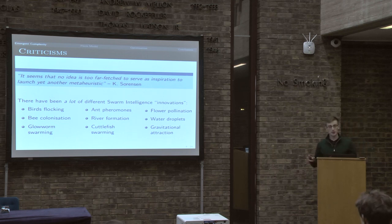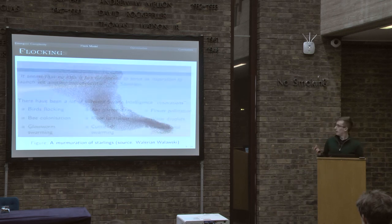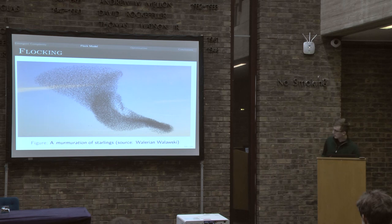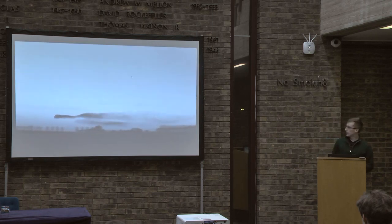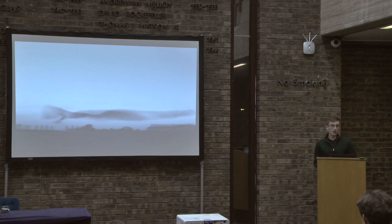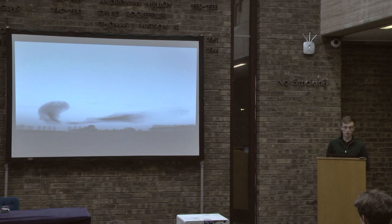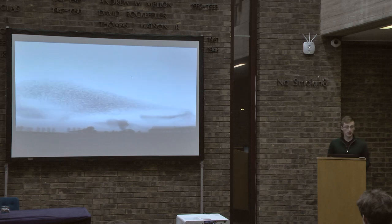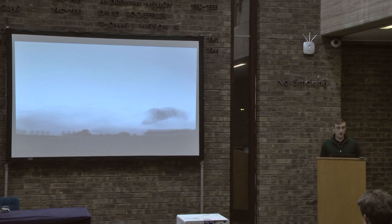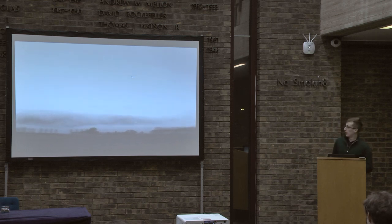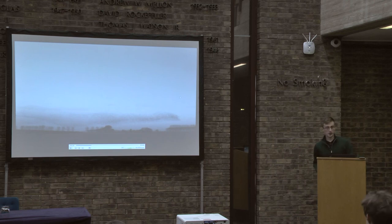We're going to talk about birds flocking. This is a murmuration of starlings — they're really cool. This is thousands of starlings moving through space. They're solving an optimization problem: trying to minimize their energy use in traveling through space, and it's quite a hard optimization problem. There's dynamic flow of air going on, and the starlings themselves are quite stupid, so they're trying to solve a problem with limited resources. We're going to talk about how we can achieve something like this with a simple computer system.